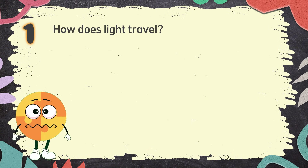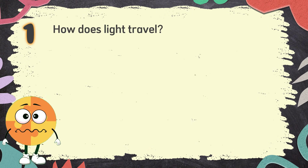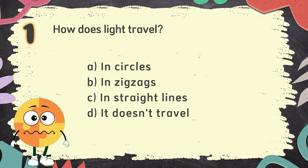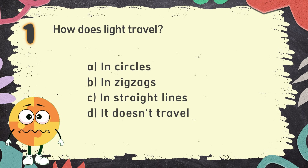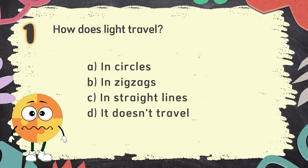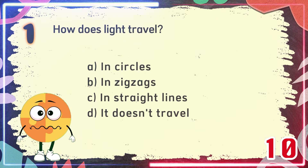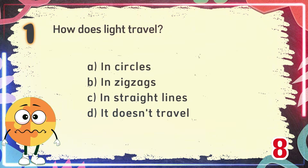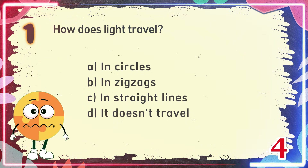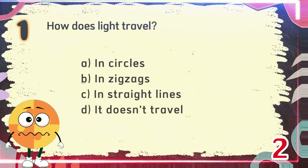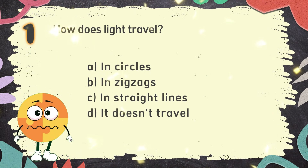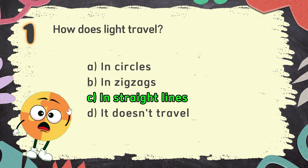Number 1. How does light travel? The choices are: A. In circles, B. In zigzags, C. In straight lines, D. It doesn't travel. The correct answer is C: In straight lines.